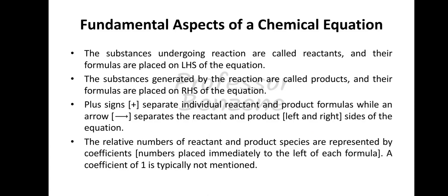The relative number of reactant and product species are represented by coefficients — numbers placed immediately to the left of each formula. A coefficient of 1 is typically not written. For example, 2CO2 and 2H2O both have coefficients of 2.